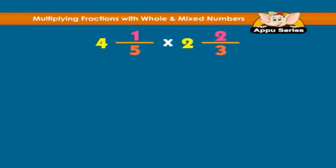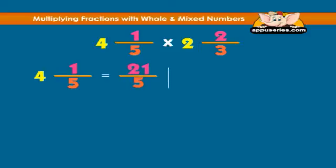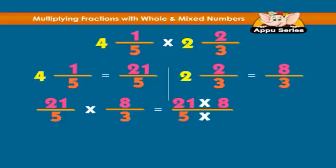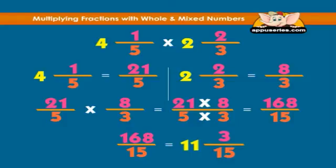To multiply mixed numbers, convert them to improper fractions and multiply. For example: 4 and 1/5 times 2 and 2/3. Converting to improper fractions, 4 and 1/5 equals 21 over 5, and 2 and 2/3 equals 8 over 3. So 21 over 5 times 8 over 3 equals 168 over 15. Reducing this further, we get 11 and 3 over 15.